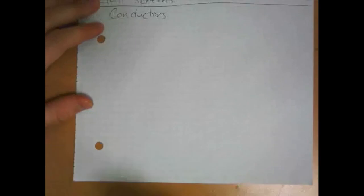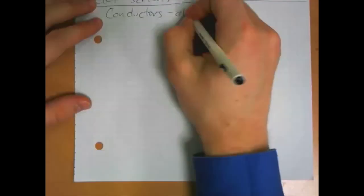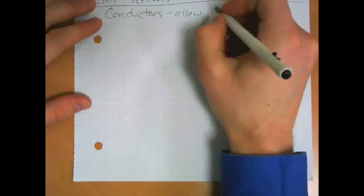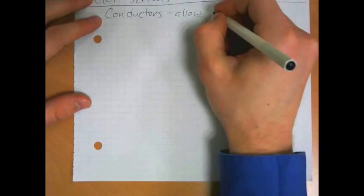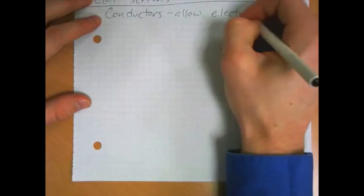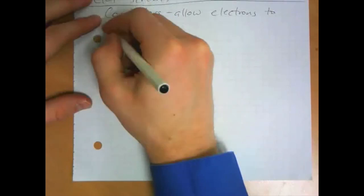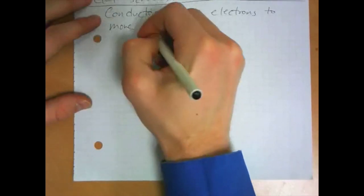I mentioned before that conductors allow electricity to flow freely. What's really moving is electrons. Conductors allow electrons to move freely. That's what defines a conductor.